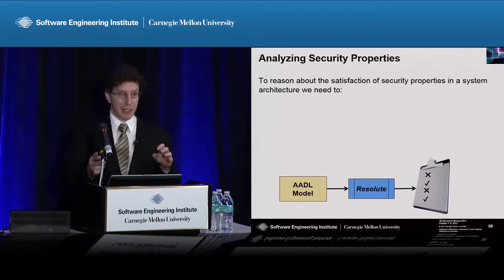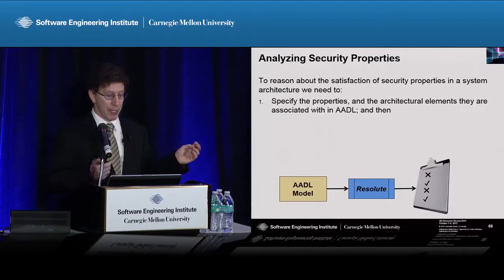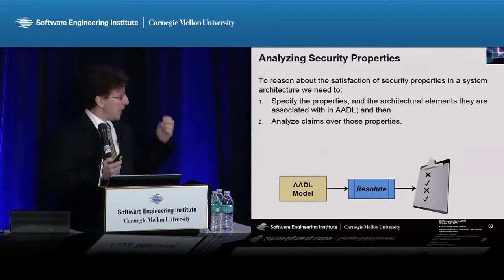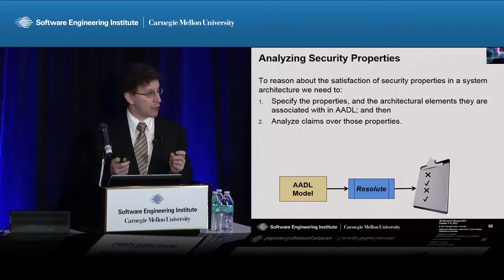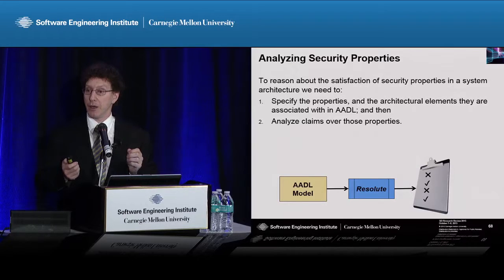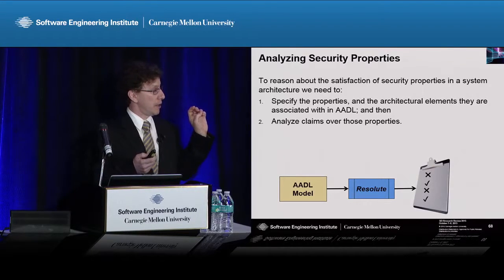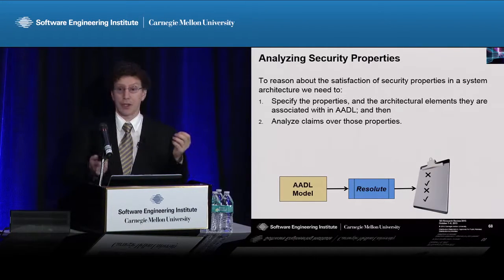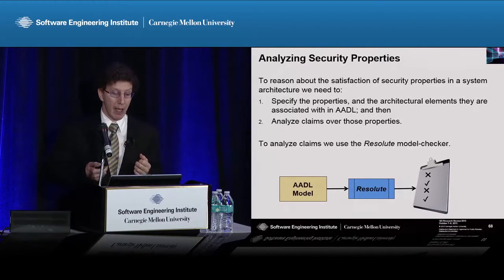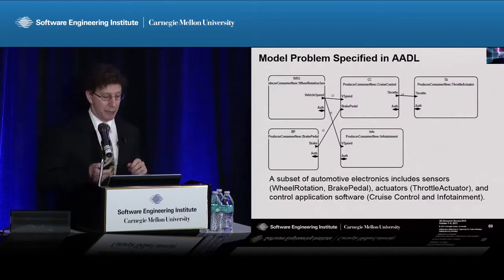To reason about security properties at an architectural level, we need to specify the properties and say which architectural elements those properties pertain to. Then we make claims and analyze claims over those properties — for example, a claim that every component is authorized and authenticated, or that data being transferred satisfies a claim that they're in the same or compatible access group with compatible access rights. To do this, we use the Resolute Model Checker, which Peter mentioned as one of the add-ons to AADL.